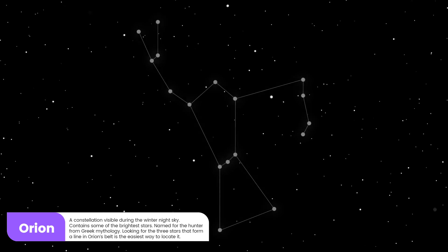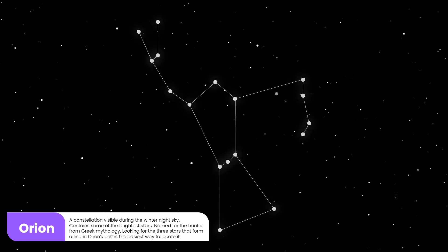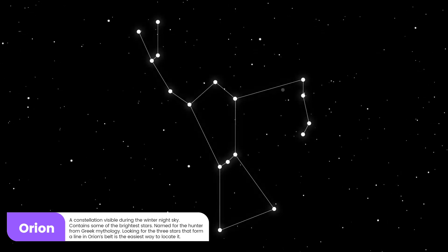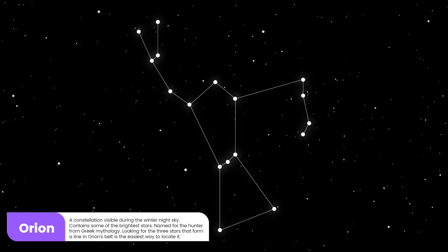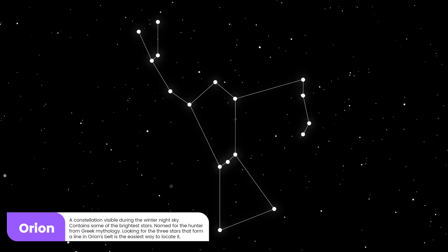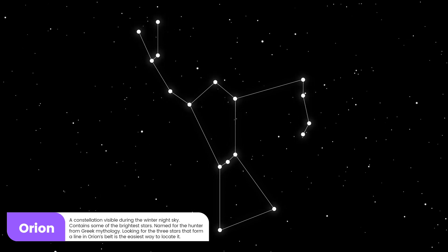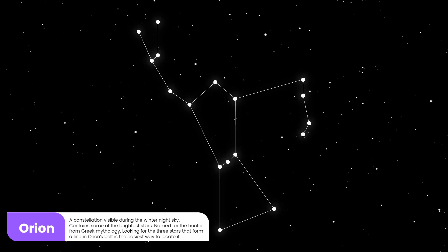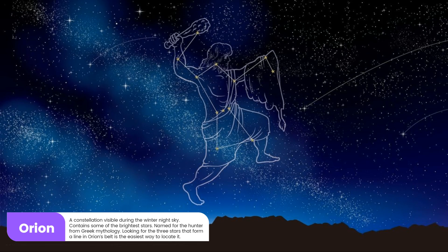13. Orion: A constellation visible during the winter night sky, contains some of the brightest stars, named for the hunter from Greek mythology. Looking for the three stars that form a line in Orion's belt is the easiest way to locate it.